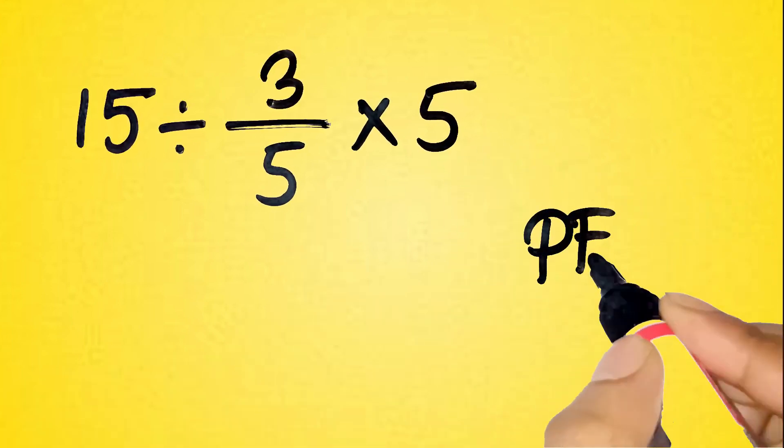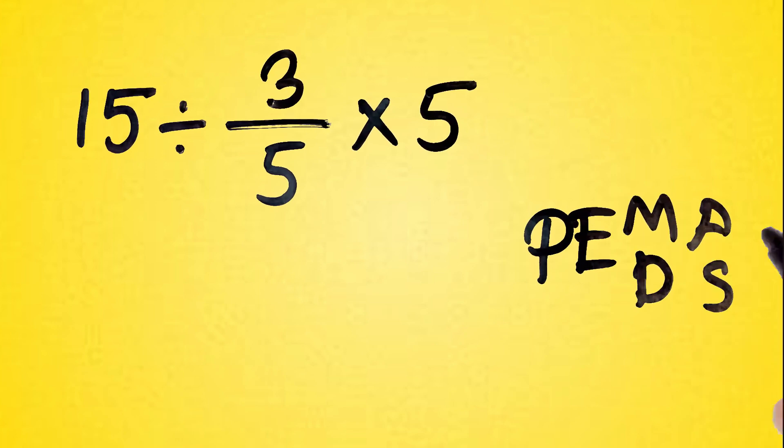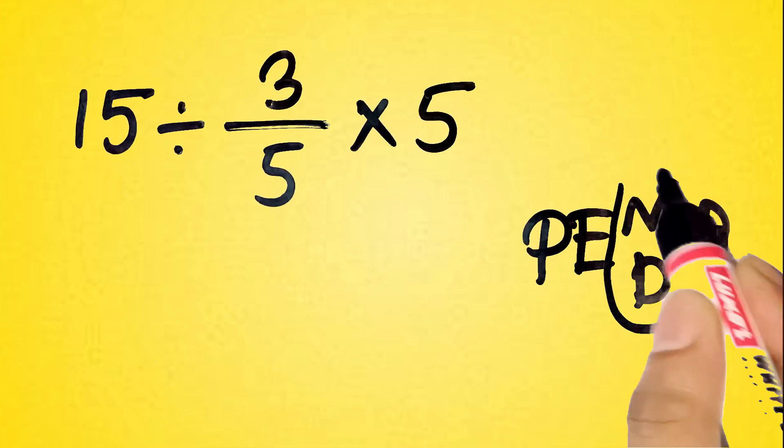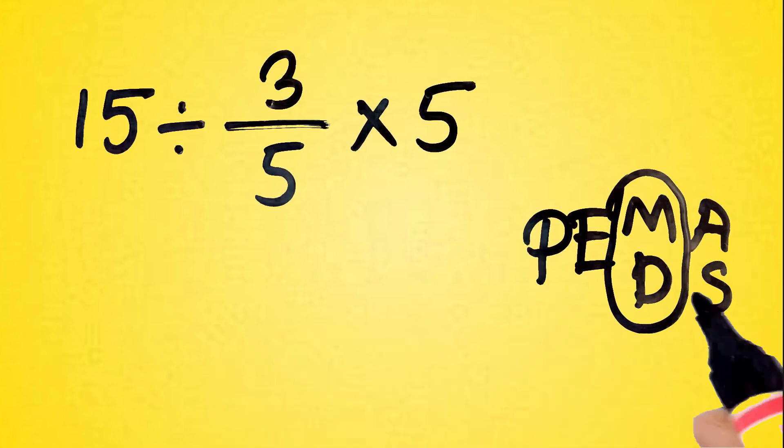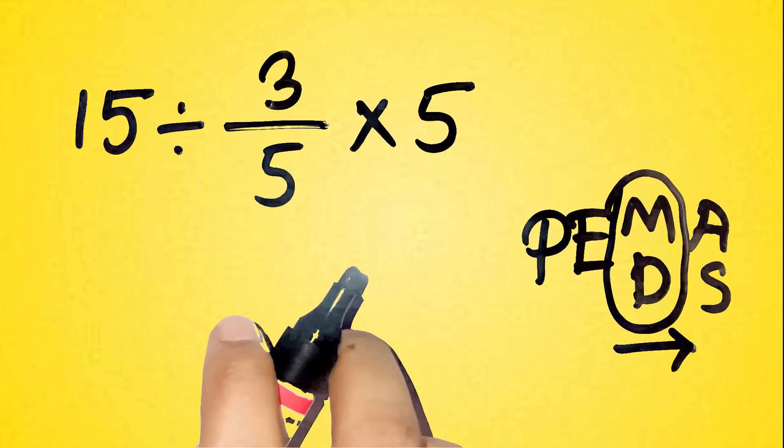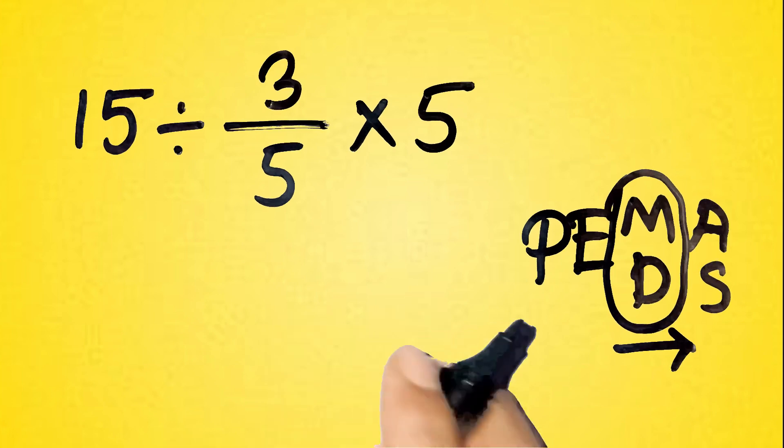First, remember PEMDAS. Parentheses, exponents, multiplication, division, addition, subtraction. But here's the kicker. Multiplication and division are on the same level, so we process them left to right. Yes, left to right. Not just canceling numbers magically.